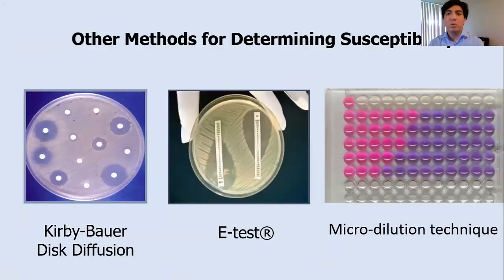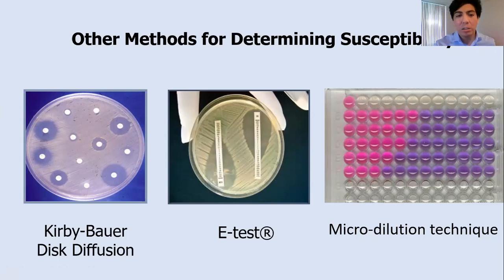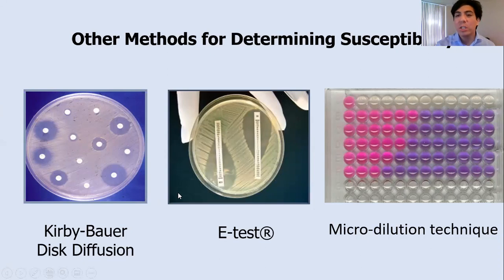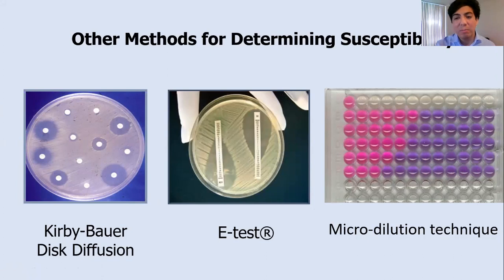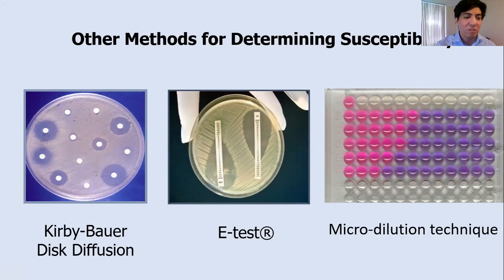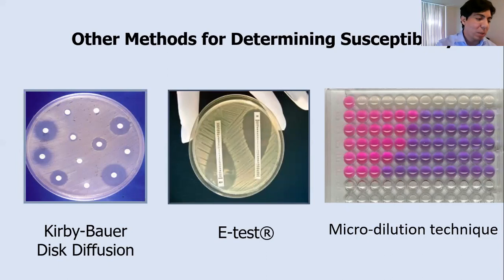There are many methods to determine susceptibility. Manual methods include the Kirby-Bauer disc diffusion — used more in Europe — and the E-test, typically used to confirm susceptibility. The first-line approach uses automated systems such as the Microscan, Vitek, and TREK, which use microdilution technique and can provide exact MICs and susceptibility ranges for the bacteria.